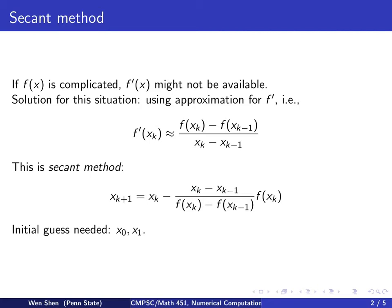We see that in order to initiate the iteration, we now need two initial guesses, x0 and x1.